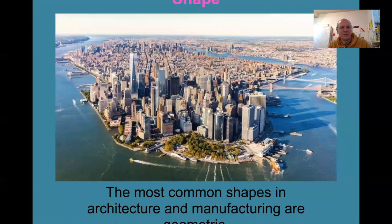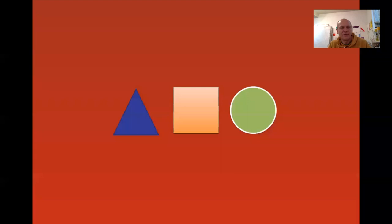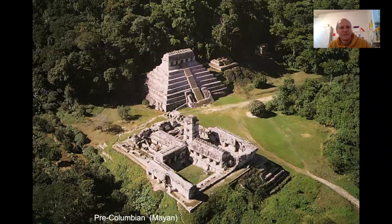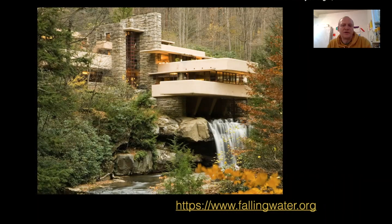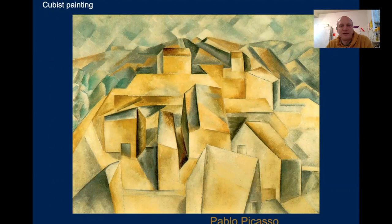Look at these basic shapes — hopefully you know these: the triangle, the square, and the circle. There's a link you could click on to learn more about Frank Lloyd Wright's house called Fallingwater — a pretty cool design. Cubist paintings are all about making what were usually organic shapes into geometric shapes.